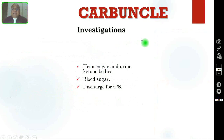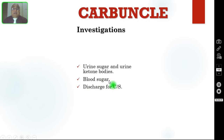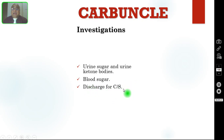For investigations, you should do urine sugar and urine ketone bodies because the majority of these patients are diabetic. You must also do a blood sugar level to find out whether the patient is hyperglycemic — most will have uncontrolled diabetes. Because there is pus discharge, you have to send the pus for culture and sensitivity and start the appropriate antibiotic.